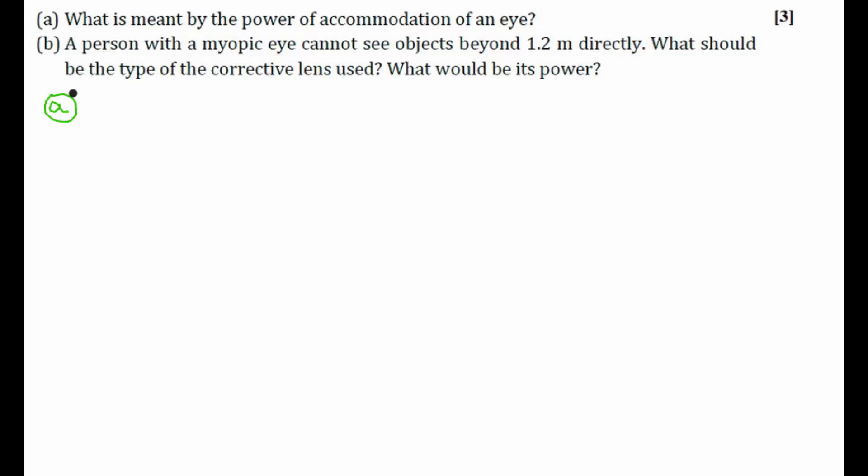Power of accommodation of an eye is nothing but the ability of the eye to adjust the focal length of its crystalline lens with help of its ciliary muscles.